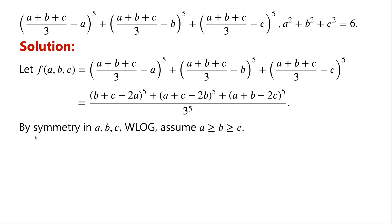By symmetry in A, B, C, without loss of generality, we assume that A is greater than or equal to B, which is greater than or equal to C. Then B plus C minus 2A must be less than or equal to 0.